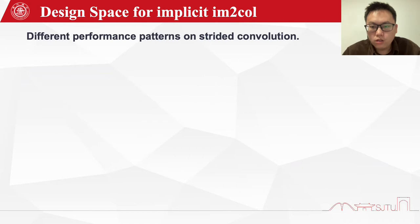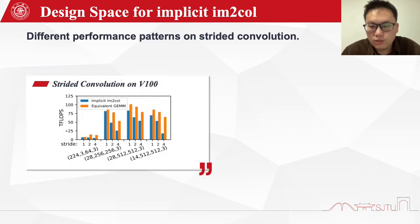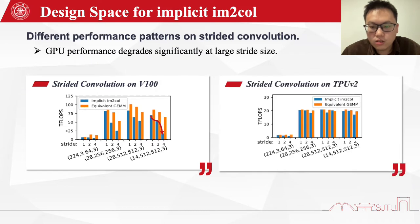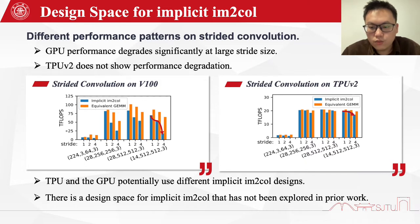We also demonstrate the different performance patterns for strided convolution. The left figure presents the performance result at different strides on GPU. GPU performance degrades significantly at large stride sizes. In the meantime, TPU does not show performance degradation. The difference between TPUs and GPUs suggests that they potentially use different implicit image-to-column designs, which means there is a design space for implicit image-to-column that has not been explored before.